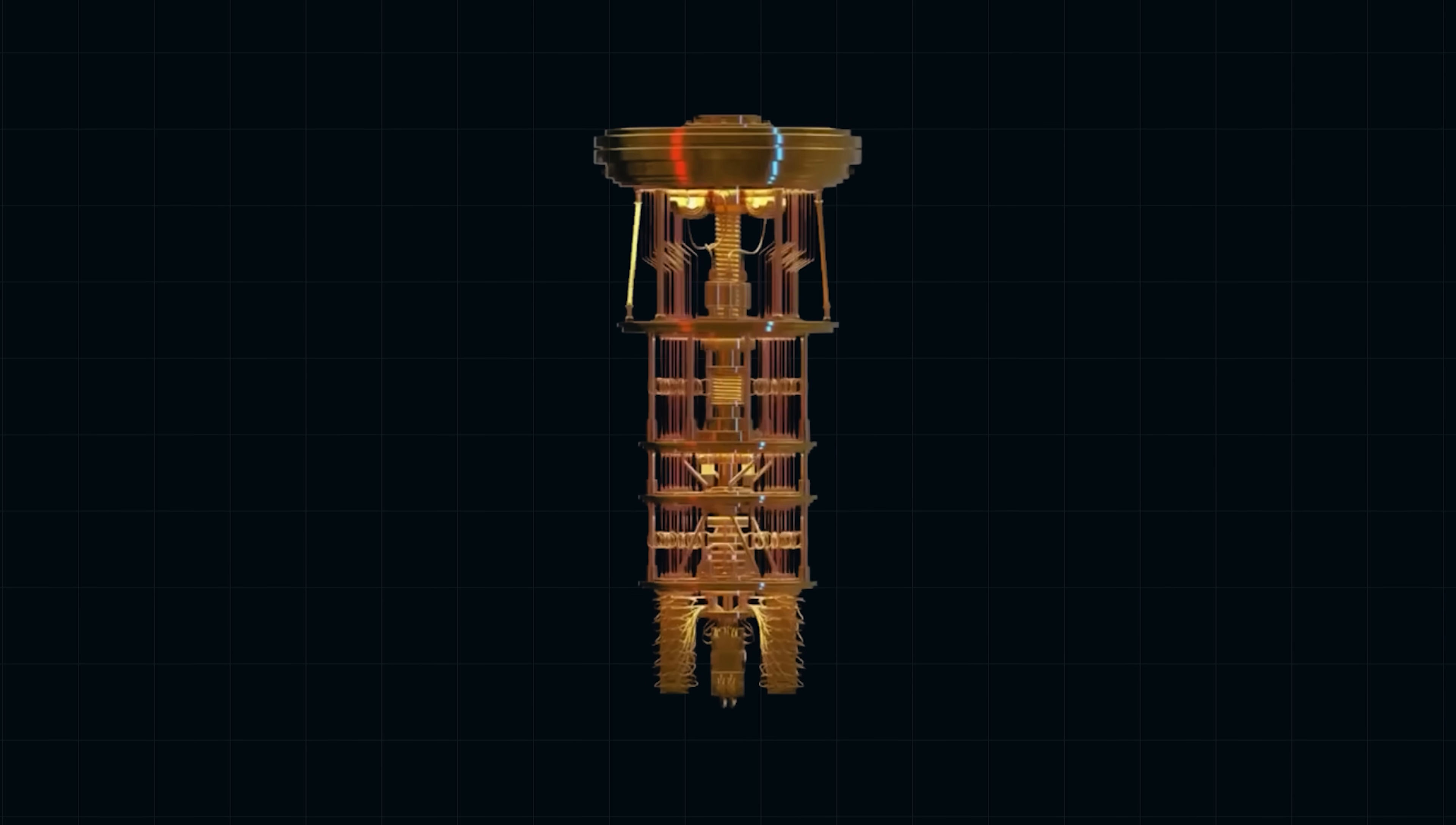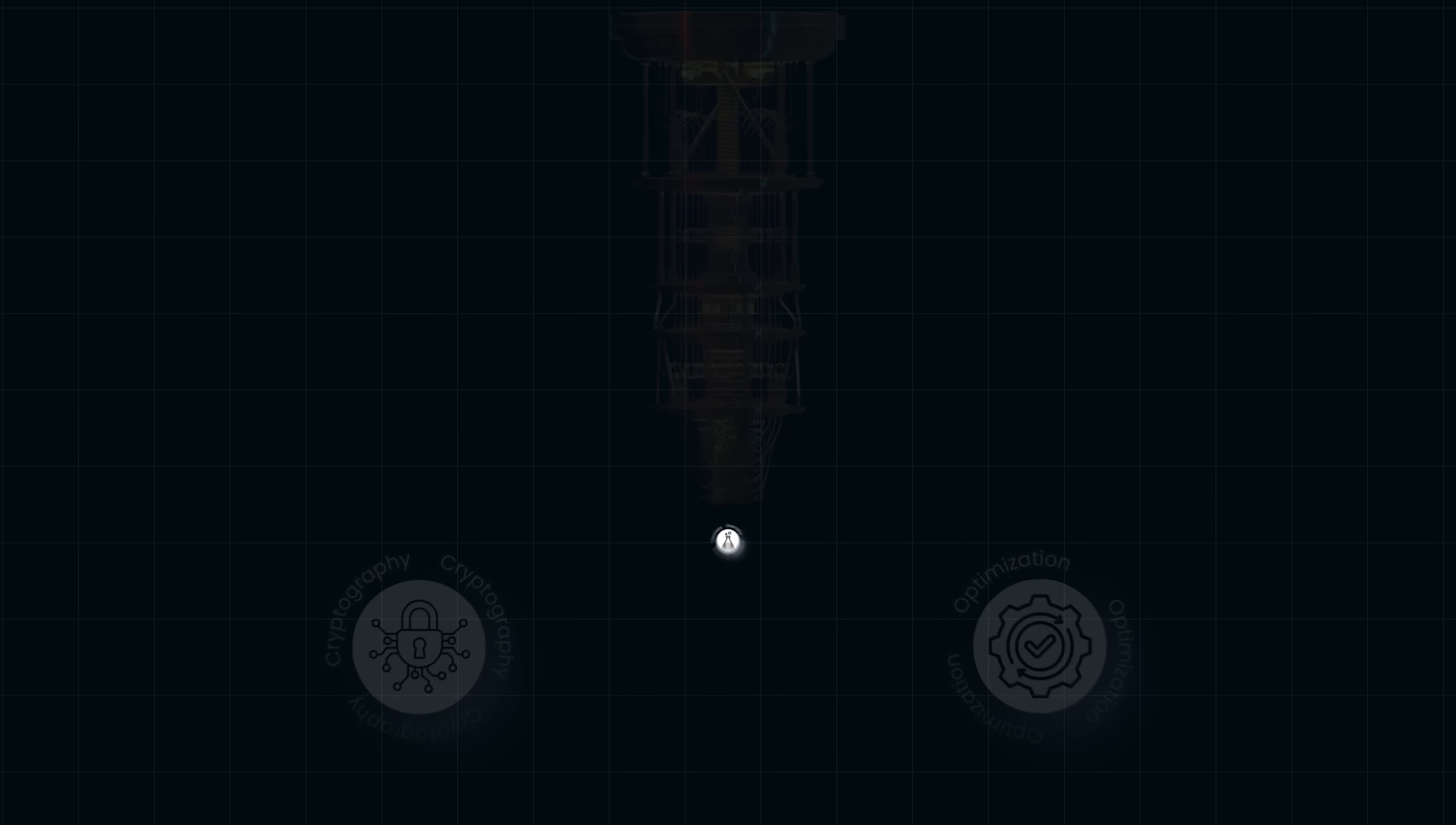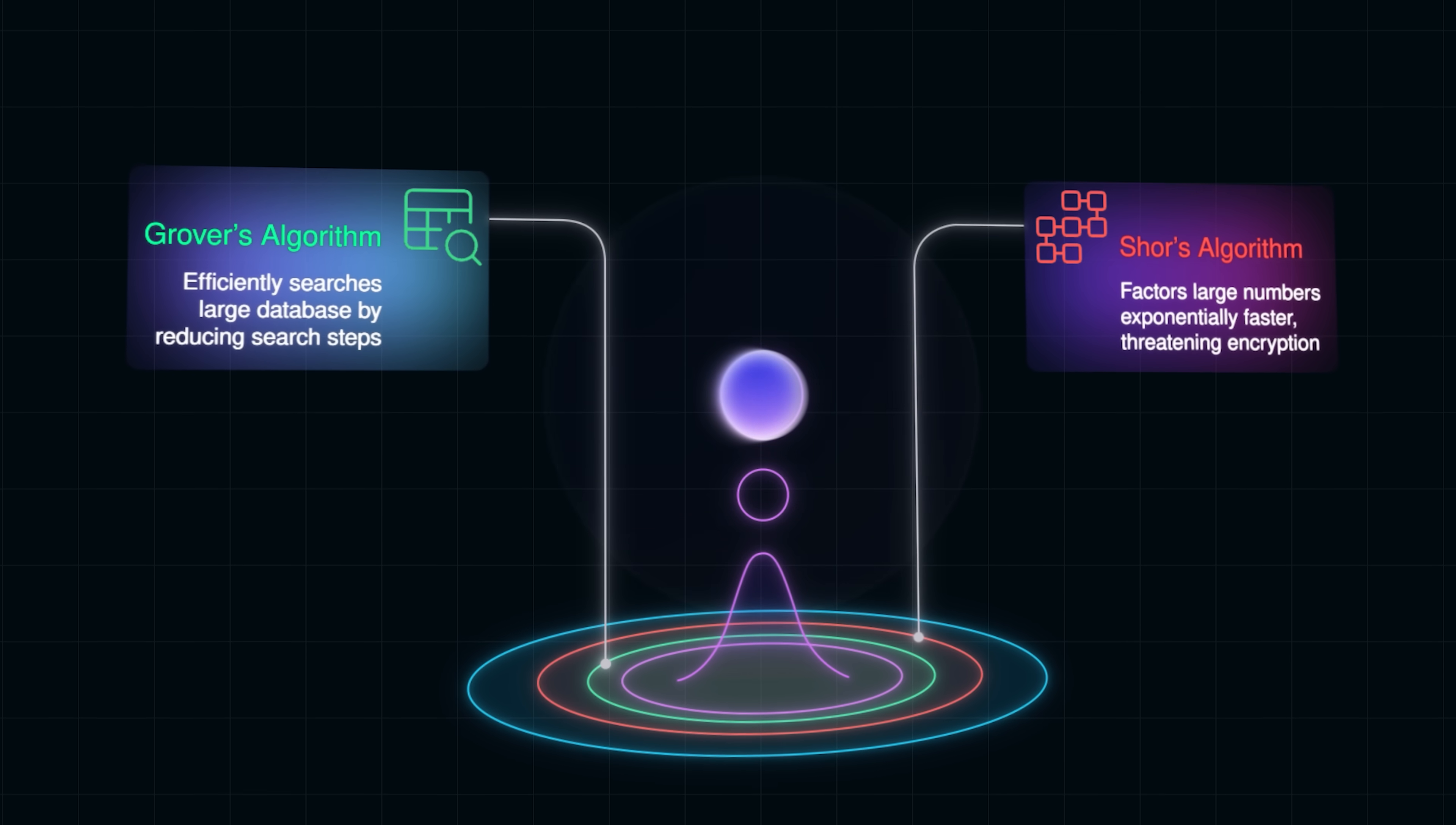Quantum computing is still in its early days, but it's already reshaping fields like cryptography, chemistry, and optimization. In our next video, we'll dive deeper into its flagship algorithms, Shor's and Grover's, and really see how they put all these principles to work.